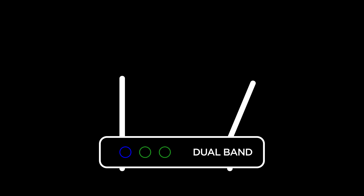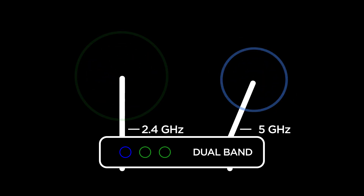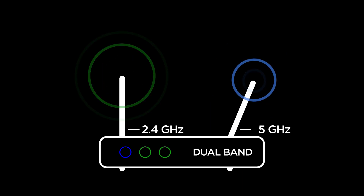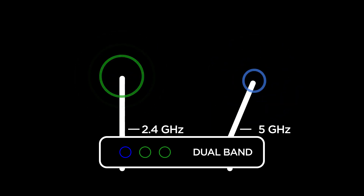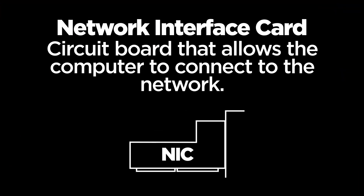A Wi-Fi router labeled as dual band uses both 2.4 GHz and 5 GHz wireless frequencies to broadcast wireless signals. 5 GHz has the benefit of being a newer frequency that won't be bogged down by as many devices. Your computer often receives this network connection through the network interface card, or NIC.